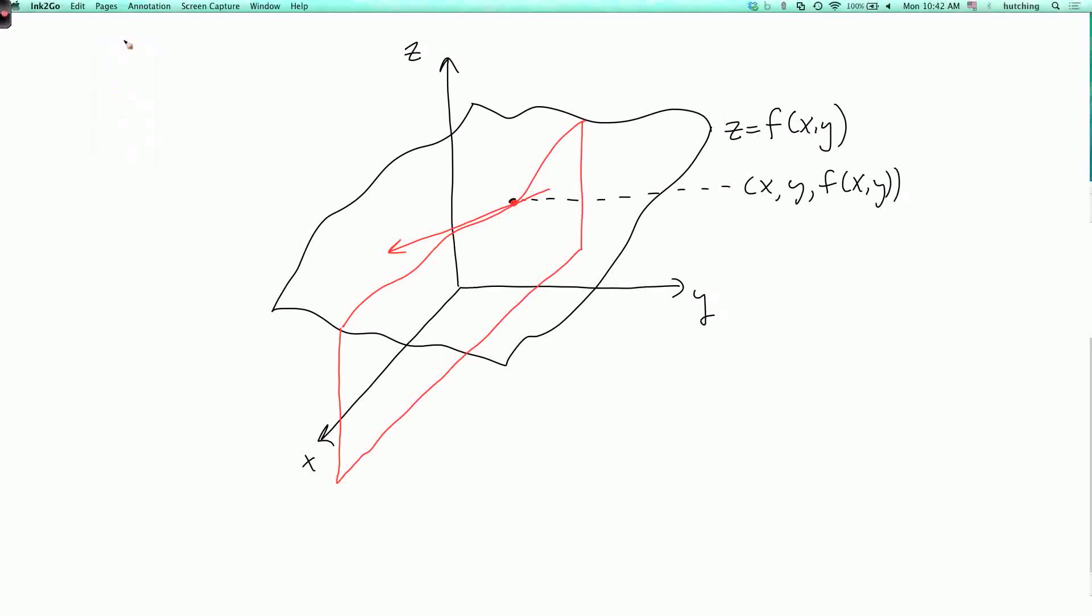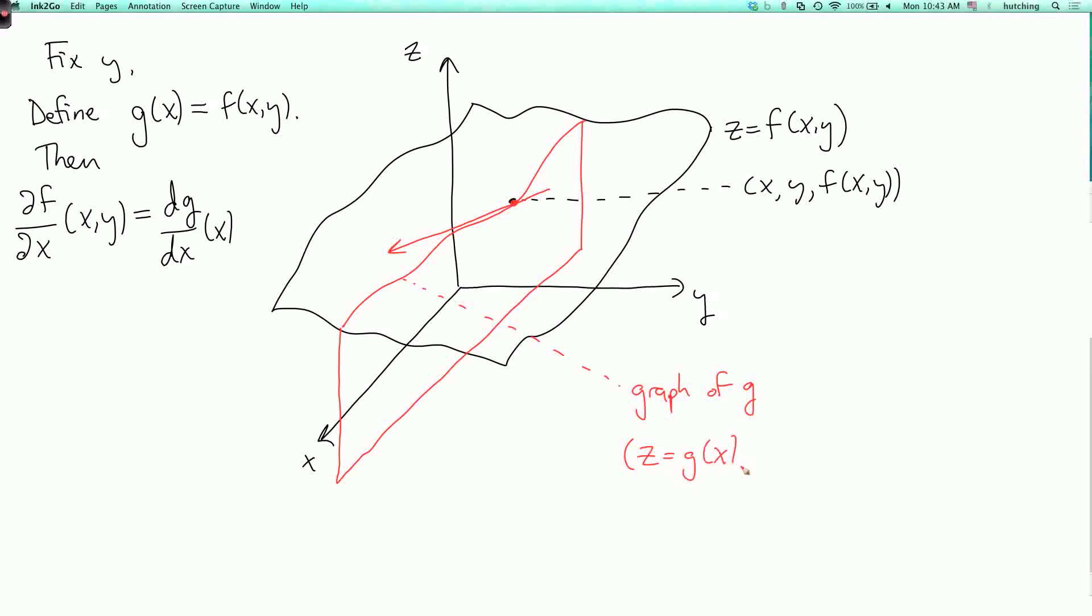So to say that more mathematically, we can fix y and we can define the function g of a single variable x by g of x equals f of xy. Then the partial derivative of f with respect to x at xy is the ordinary derivative dg dx evaluated at x. And so this red curve, you can think of this as the graph of g. Namely, it's the set of points where z equals g of x and y is fixed. And we're looking at the slope of this graph.